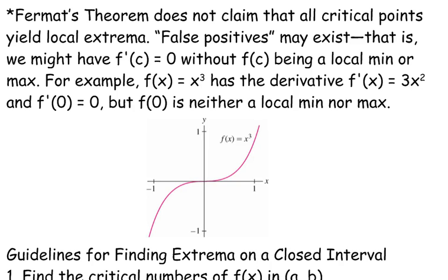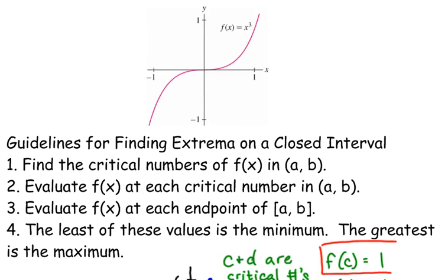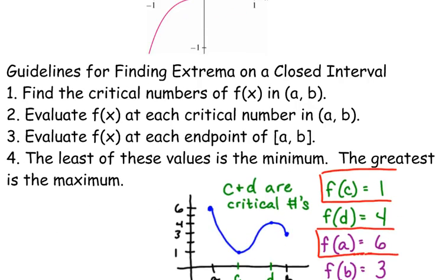But we're talking about relative, meaning it's a peak or a valley. Let's look at guidelines for finding extrema on a closed interval. You want to start by finding your critical numbers on your interval. You want to evaluate your function at the critical number, meaning you want to find the y value. Then, this is the part everyone forgets, you need to evaluate the function at your endpoints.